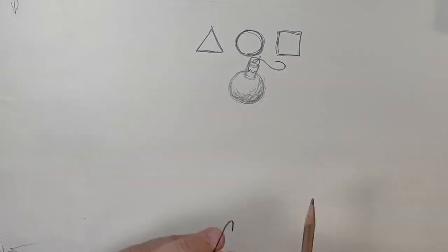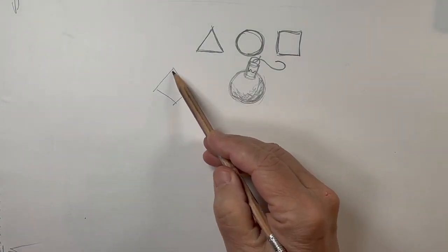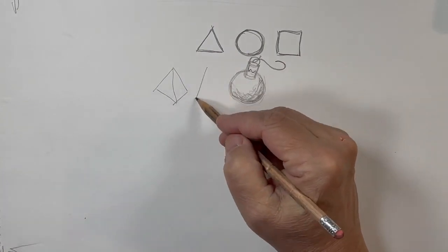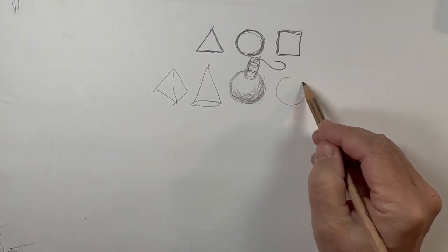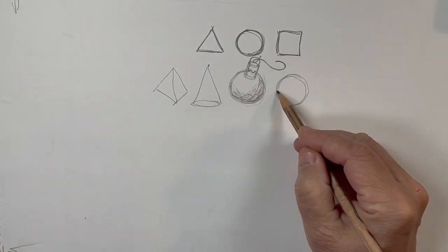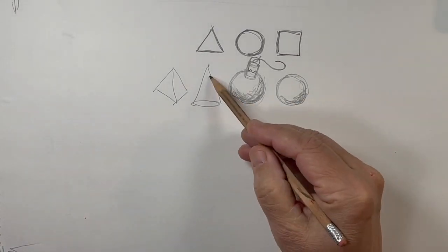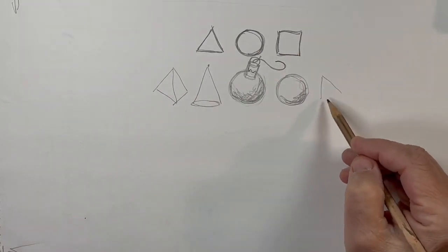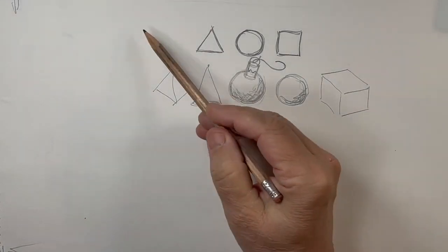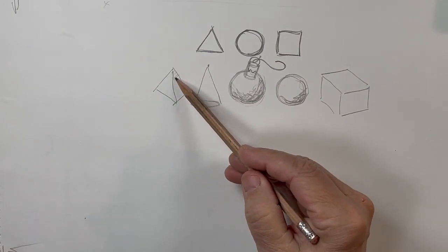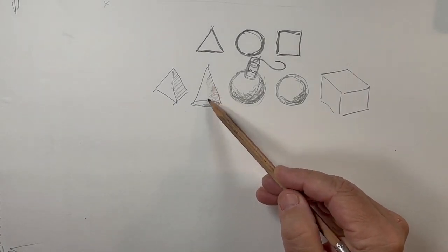Which brings us to the three-dimensionality of these items. For example, the triangle can be a pyramid, it can also be a cone — which has a round bottom and a pointed top. It can also be a sphere rather than a circle, and then the square can be a cube, something like that.